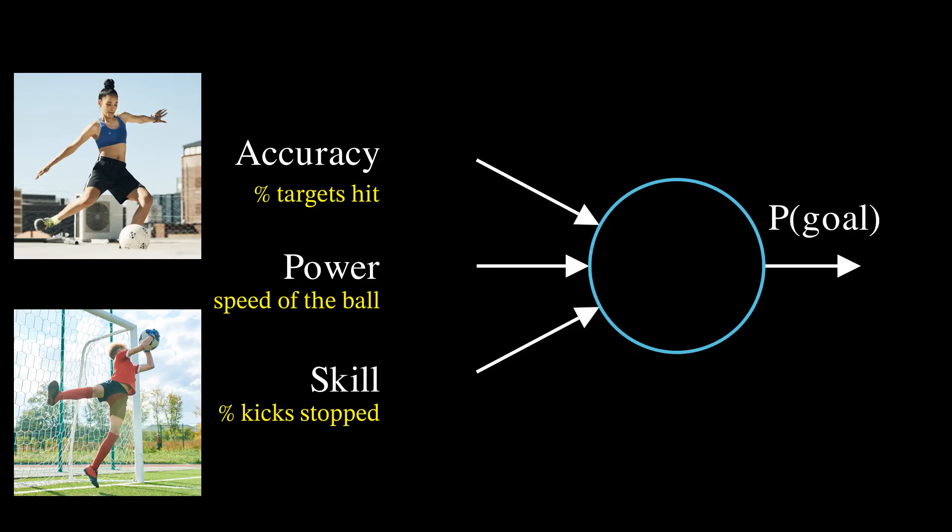Now, say the kicker has an accuracy of 0.8. This means that they hit the target 80% of the time. Let's also assume that the power is 30 meters per second, or equivalently, 98 feet per second. And the goalkeeper's skill is 0.7. Again, this means that the goalkeeper stops the ball 70% of the time on average. When we send these inputs to our neuron, it should process them and output the probability of a goal.